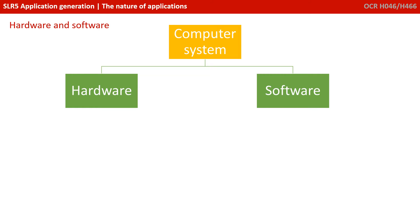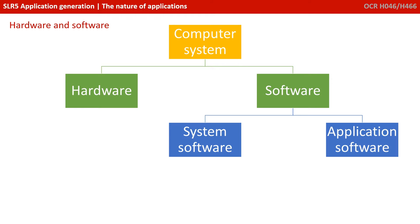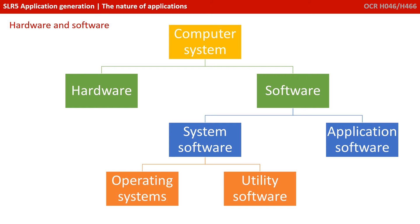As we've just said, a computer system is made up of both hardware and software. Software can be further broken down into system software and application software. System software can be broken down one more step into operating systems and utility software.